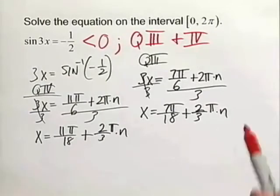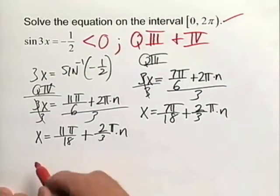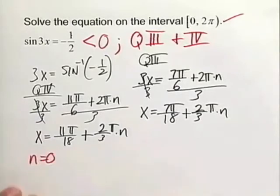Now we have to address the fact that the problem wants us to find those solutions from 0 to 2π radians. And we'll do that by plugging in values for n. And we'll start with n equals 0 for this particular problem. So in doing that, 0 times anything makes that disappear. For n equals 0, we have x is equal to 11π/18ths.